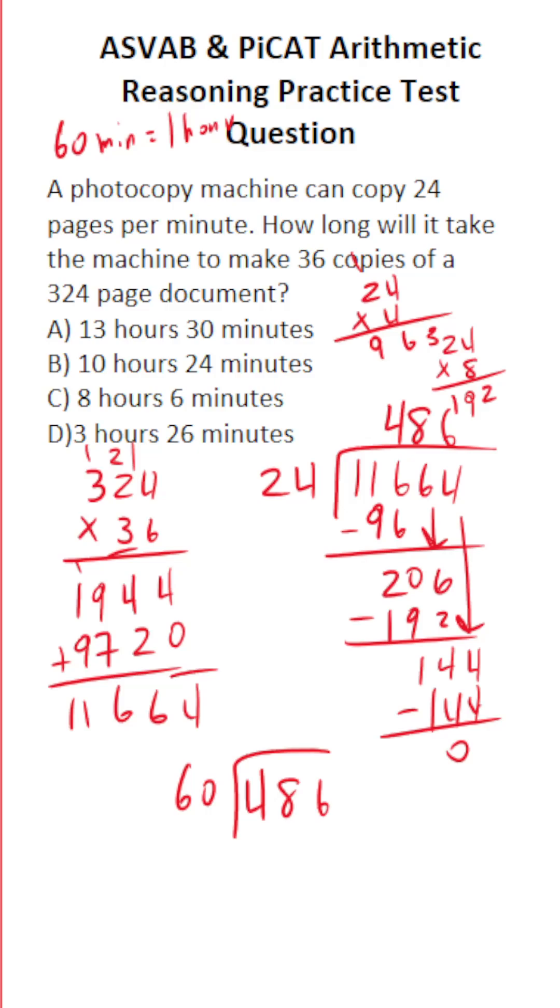How many times does 60 go into 486 without going over? Well, think of 60 like 6. 6 times 8 would be 48. So 60 times 8 is going to be 480.